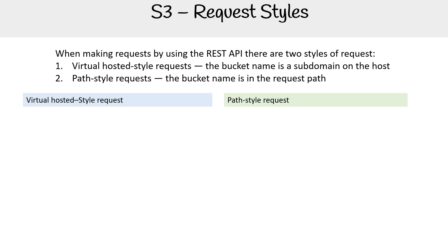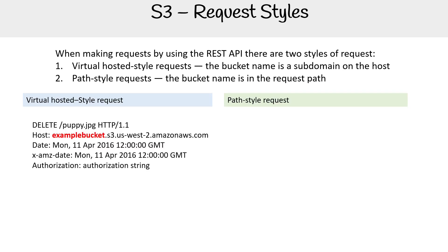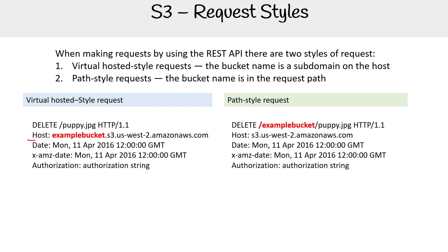On the left hand side, the idea is that when you have that request, the bucket name is in the host here, as you can see — it's up here. And then for the path style request, it's actually part of the path, which gets appended to the end here.